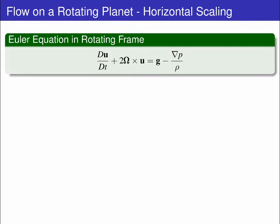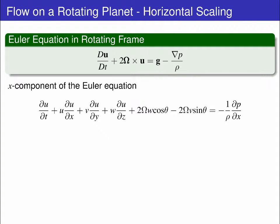Now we want to look at the horizontal scaling. We start with the x component of the Euler equation. We write these out in full, giving the acceleration and advection terms, the y and z components of the two omega cross U vector, and the pressure gradient in the x direction on the right-hand side.